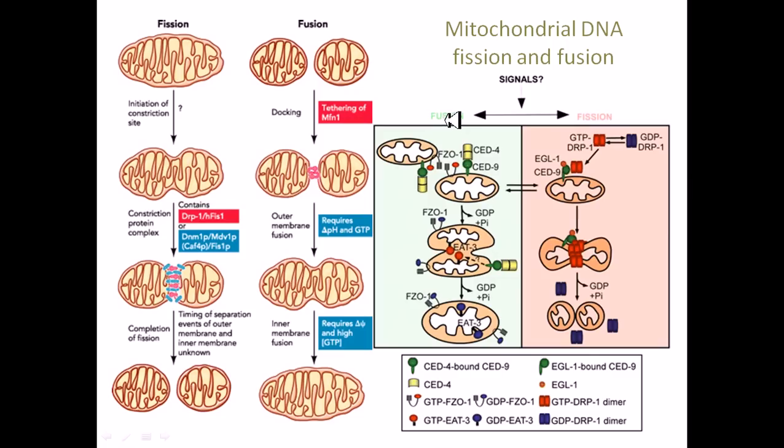Now let's talk about the mechanisms with which mitochondrial DNA behaves like a fully grown cell. That means they can divide themselves and sometimes they can join themselves to make a larger cell.